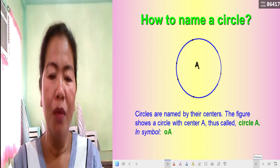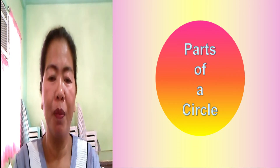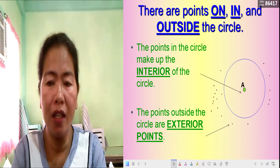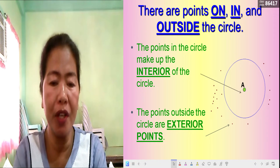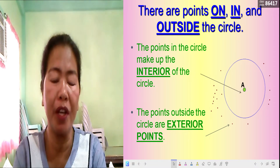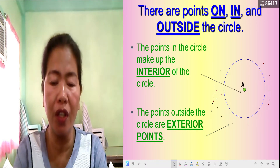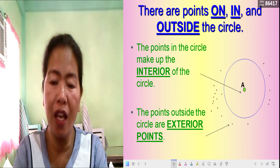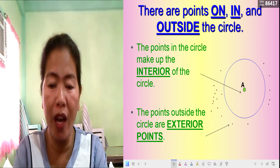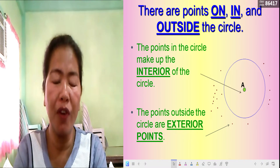There are points on, in, and outside the circle. Points inside the circle make up the interior, while points outside the circle are exterior points. In the illustration, many dots are outside the circle, and there is only one point in the interior — labeled letter A — which is the center of the circle.